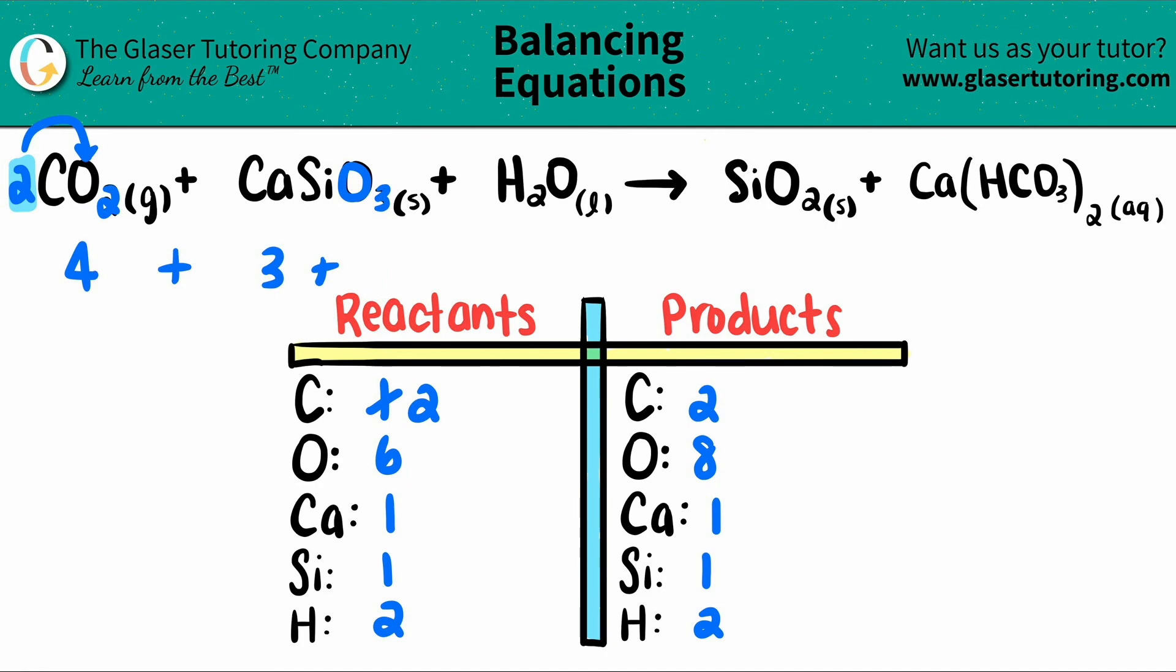So four plus three plus one, seven plus one is eight. So I'm not going to say we have six oxygens anymore. We have eight.